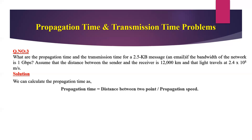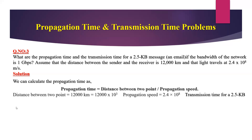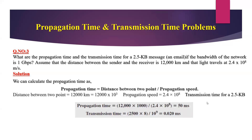With respect to this problem, distance between two points equals 12,000 kilometers and propagation speed is 2.4 × 10⁸ meters per second. Applying the formula: 12,000 × 10³ divided by 2.4 × 10⁸ gives 50 milliseconds — the same result as the previous problem.